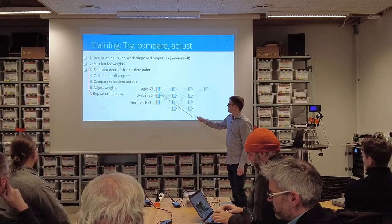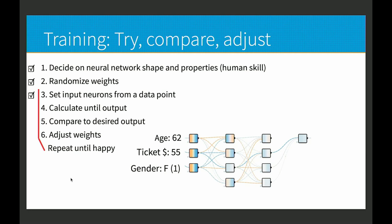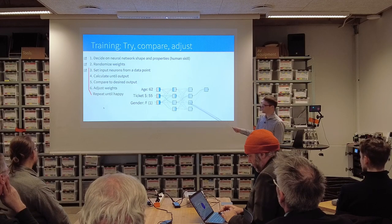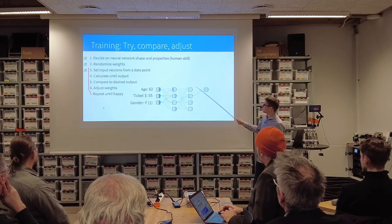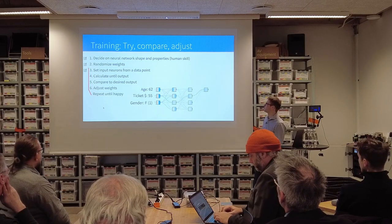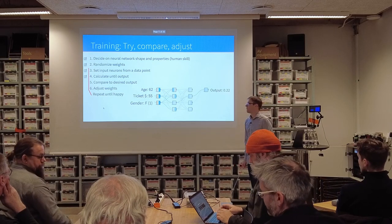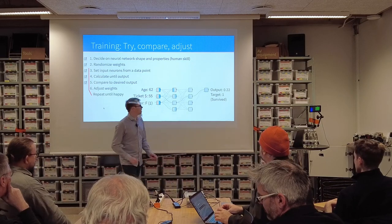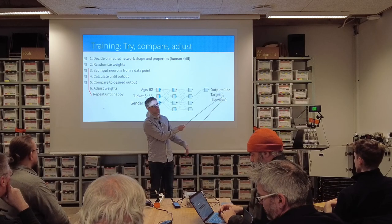We start by setting, say, a woman, age 62, who paid $55 for her ticket. We put that into the activations here. The activations and these weights — which are so far just random — decide the activation of the next neurons. Those activations and the next weights decide the activations further along, and so on until more random weights combined with these neurons decide the activation of the output neuron. Let's say in this case we get 0.22. Next step, we compare to what we want — our target — which is 1, because in the passenger list this woman is registered as survived. So we're not very good; if we'd gotten 0.98, that would have been good.